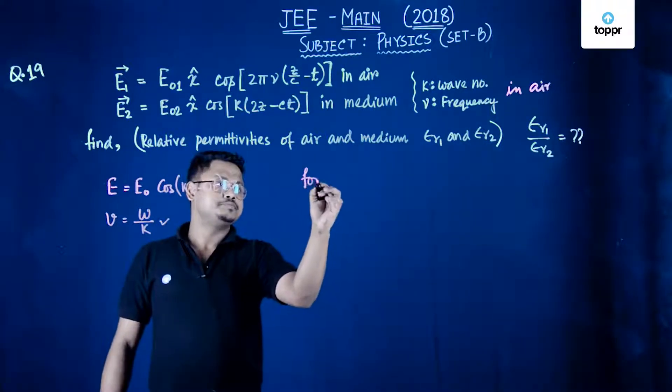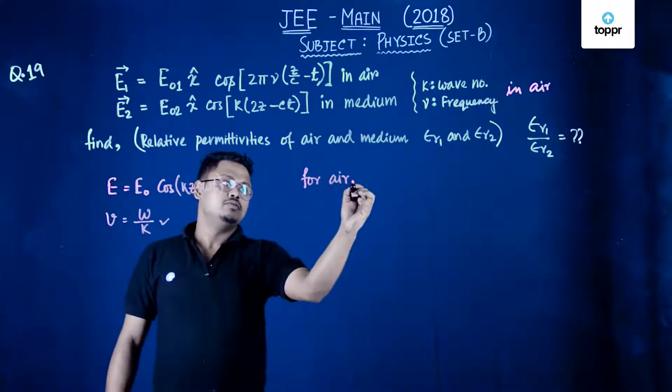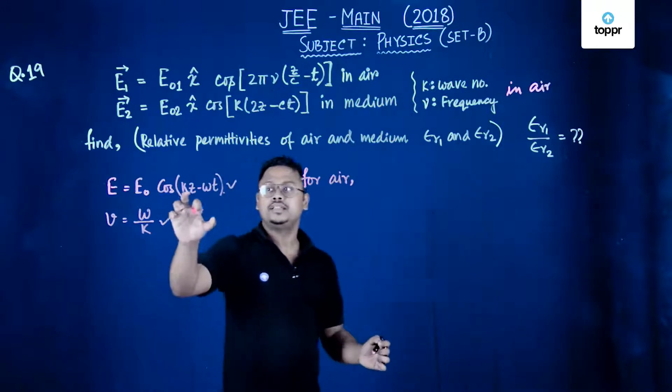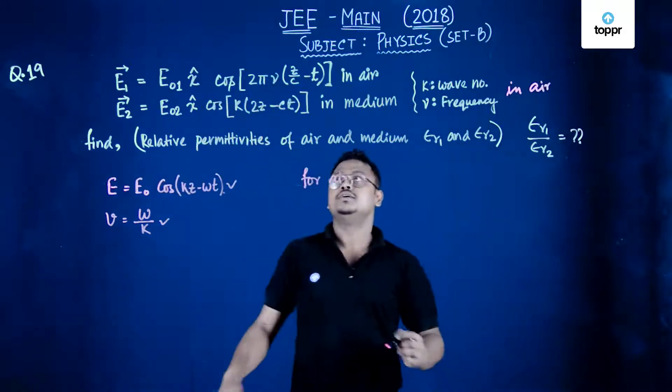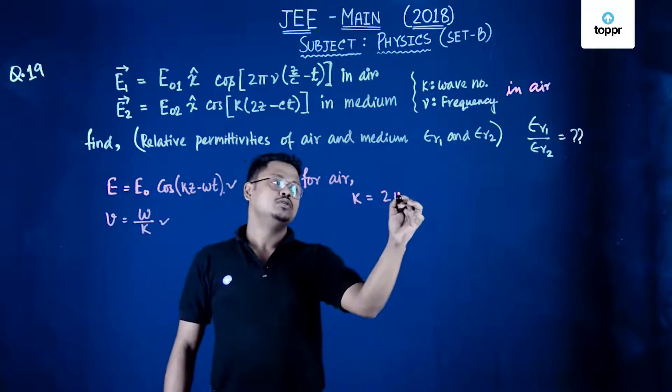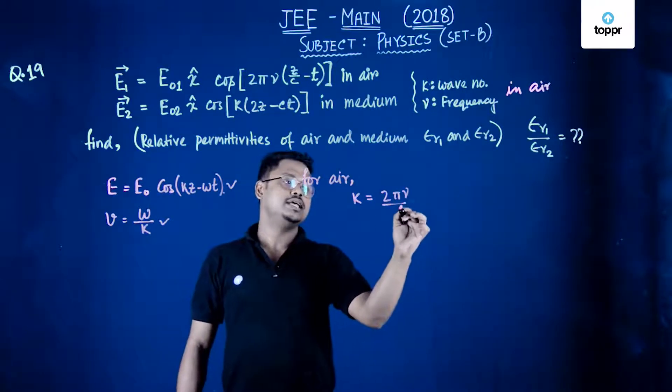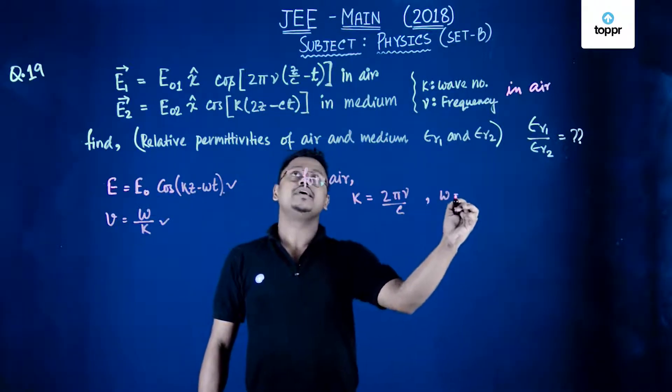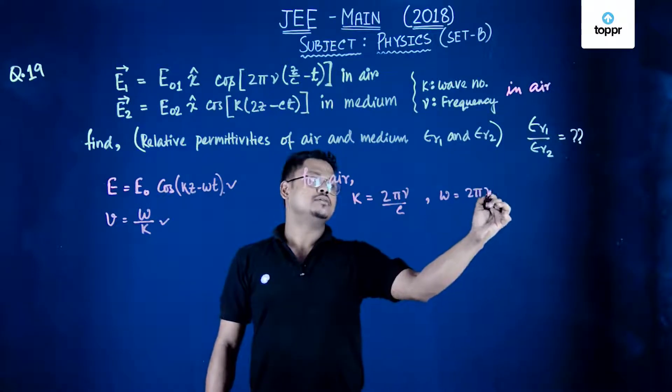So for air, if you compare this particular equation with this we can write k that is a wave number equals to 2 pi mu upon c and omega equals to 2 pi mu.